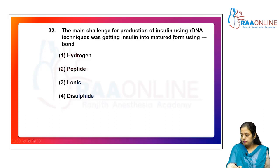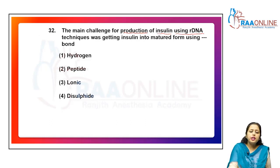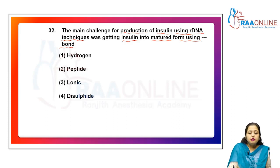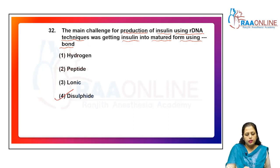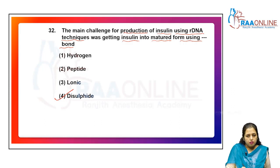The main challenge for insulin production during recombinant DNA techniques was getting insulin into its matured form — specifically the formation of disulfide bonds. The answer is option 4: formation of disulfide bonds is the challenge when using recombinant DNA technology.